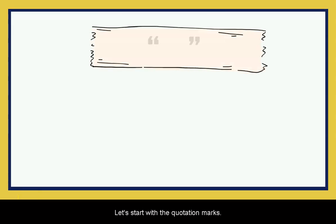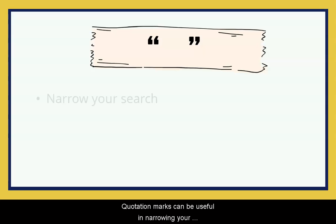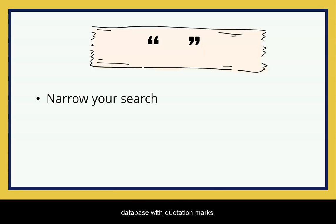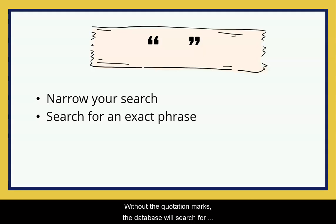Let's start with the quotation marks. Quotation marks can be useful in narrowing your search. If you enter a phrase into a database with quotation marks, you are asking the database to search for results containing exactly that phrase. Without the quotation marks, the database will search for each of those words separately.